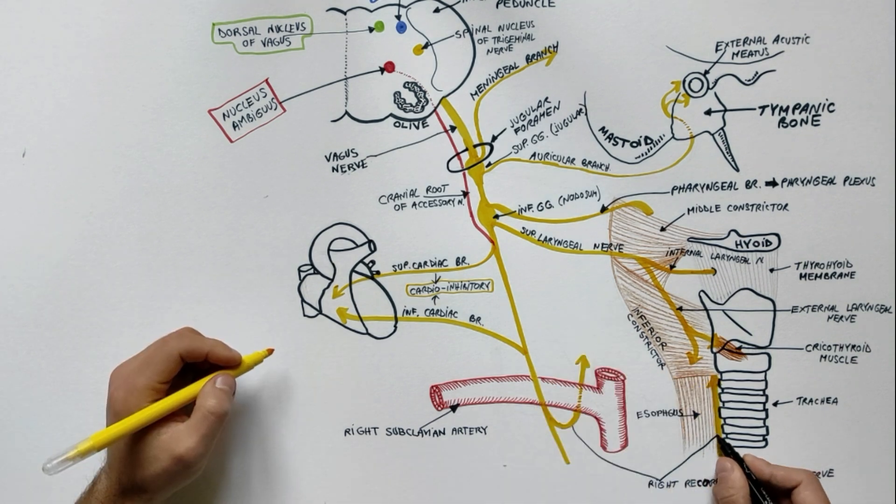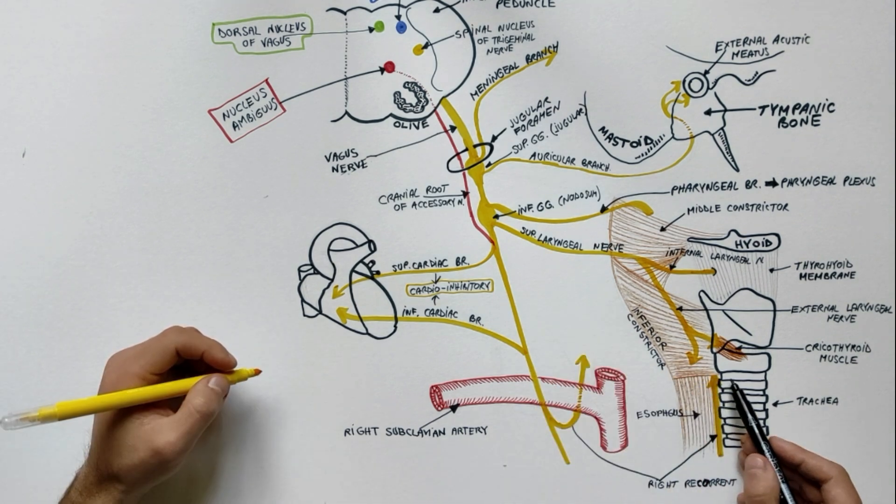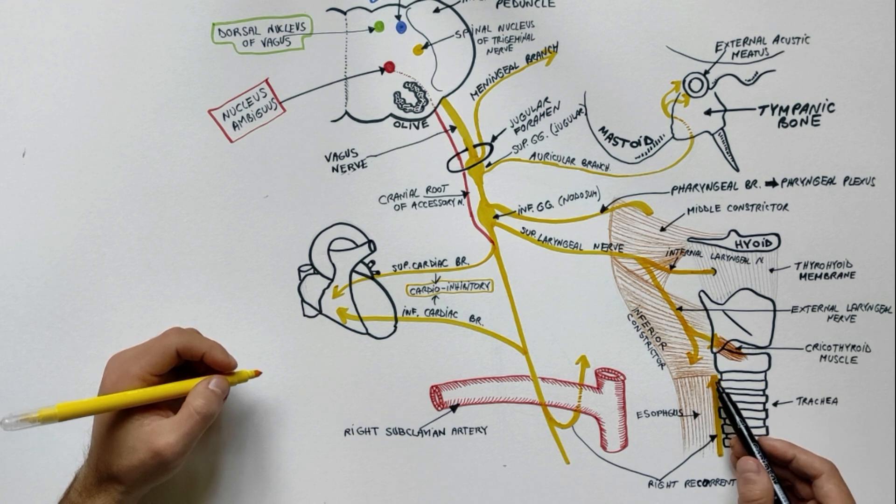Each recurrent laryngeal nerve passes deep to the inferior constrictor muscle to enter the laryngeal cavity just posterior to the cricothyroid joint.